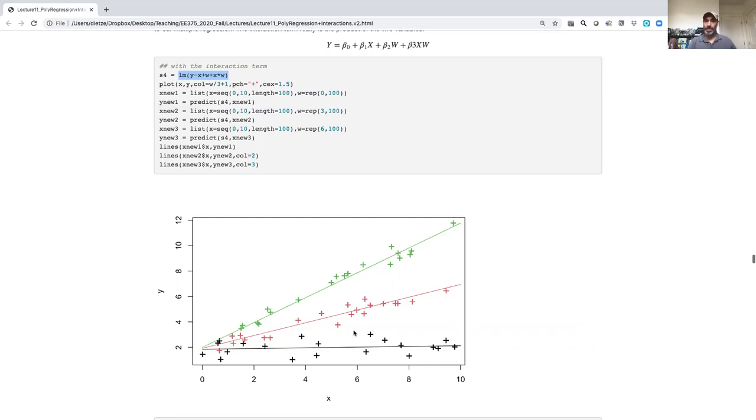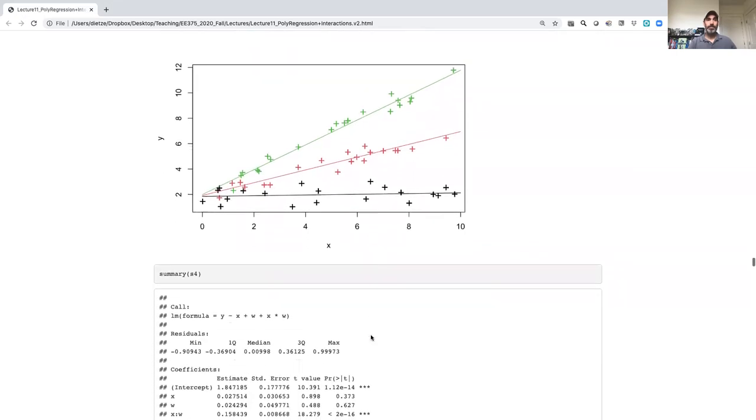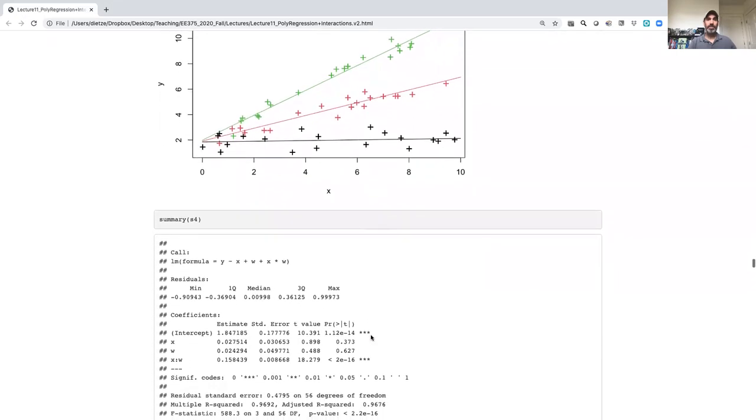Which is different from our simple multiple regression model, where again, if I don't have the interaction terms, what I'm assuming is that the covariates are modifying the intercept.